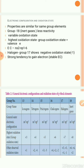P-Block elements show variable oxidation states, and the higher oxidation state is called the group oxidation state, which is equal to the number of valence electrons. Group number 17 shows a negative oxidation state and has a strong tendency to gain an electron to attain stable electronic configuration. Group 13 is called icosagens, group 14 is called tetregens, group 15 is called pnictogens, group 16 is called chalcogens, and group 17 is called halogens.